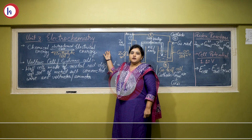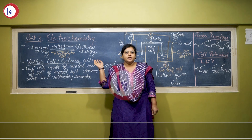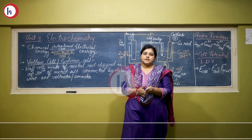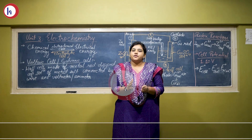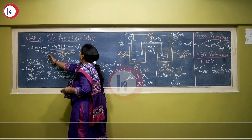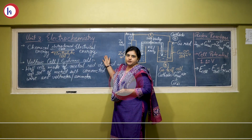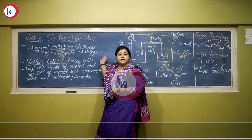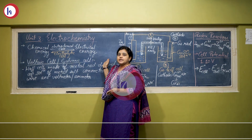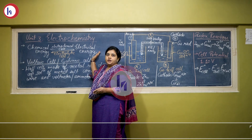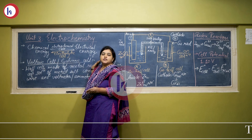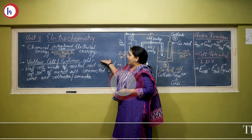This topic of Standard 12 is Unit 3, Electrochemistry. What is electrochemistry? Electrochemistry is a branch of chemistry that deals with the conversion of chemical energy into electrical energy in a spontaneous redox reaction, and simultaneously the use of electrical energy to convert it into chemical energy in a non-spontaneous reaction.